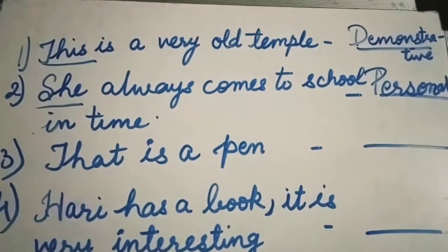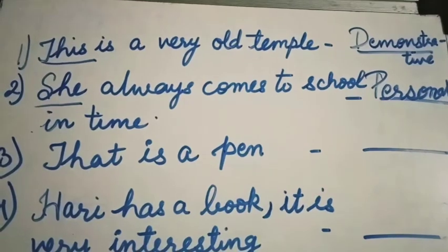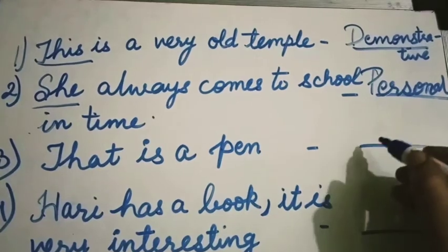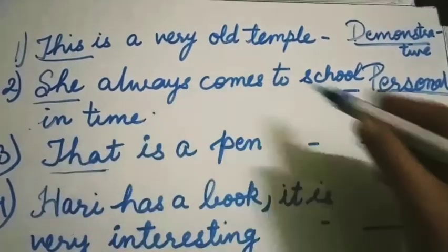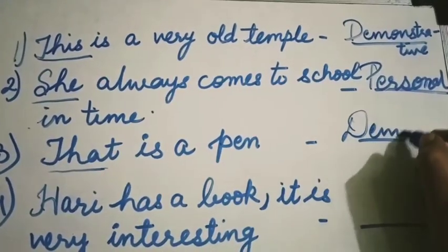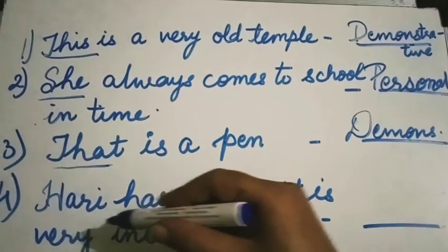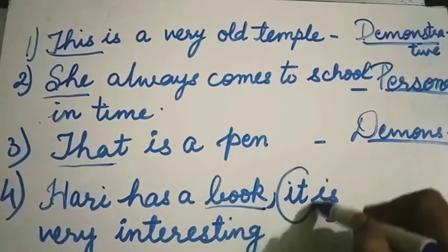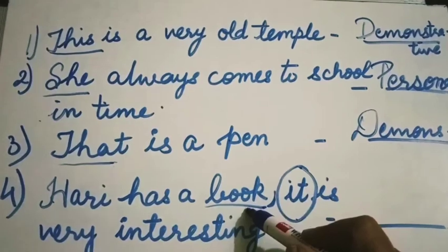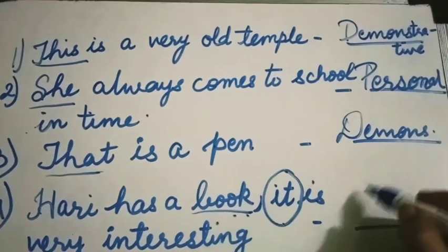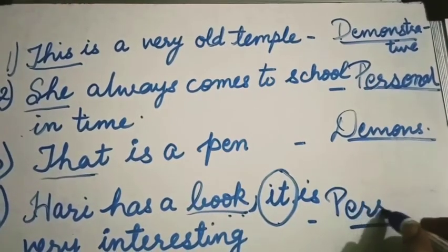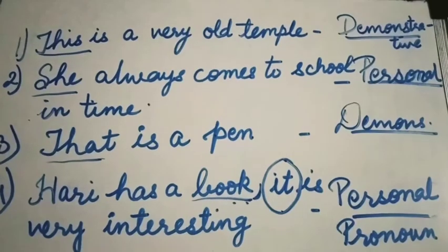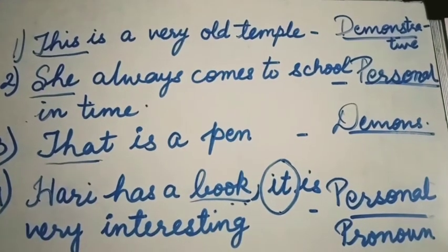Next: 'That is a pen.' Again, 'that' is pointing to an object, so it is a demonstrative pronoun. Next: 'Hari has a book; it is very interesting.' Here, 'it' refers to a thing — the book — so it comes under personal pronoun. That completes our lesson on personal pronouns and demonstrative pronouns.